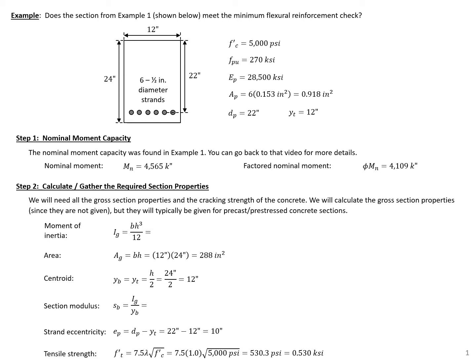The first step is to calculate our nominal moment capacity. We've already done this in example one, so we're not going to go through those steps again. You can refer to that video for more details. But we have our nominal moment capacity equal to 4565 kip inches. And it's a tension controlled section, so when we factor it with our 0.9 phi factor, we have a factored nominal moment equal to 4109 kip inches.